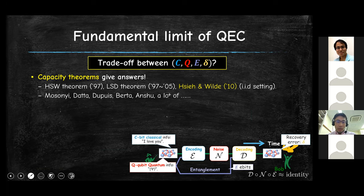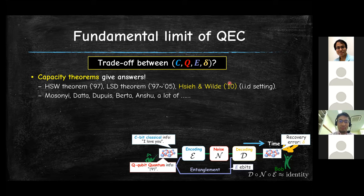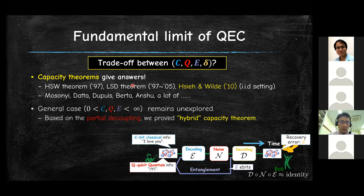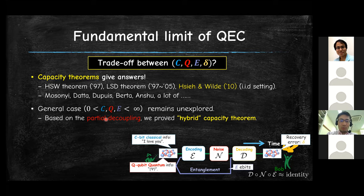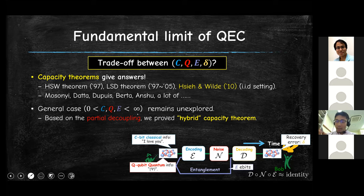There are many literatures on trade-off relations over 30 years. For special cases, we have famous results such as the HSW theorem and LSD theorem. But in the general case where all c, q, and e are non-zero and finite, it remained unexplored for some time. This is what we have done based on the partial decoupling theorem — we proved the trade-off relation for this general case, which we call the hybrid capacity theorem.